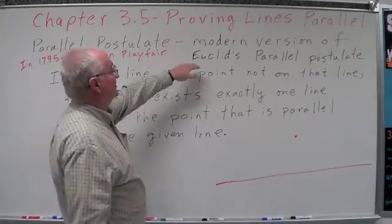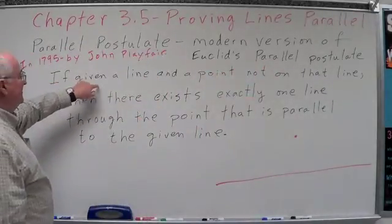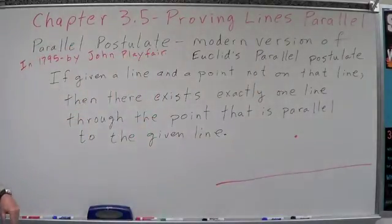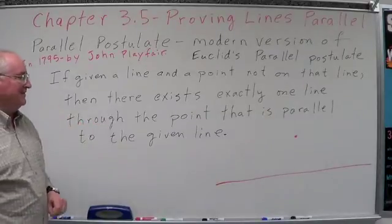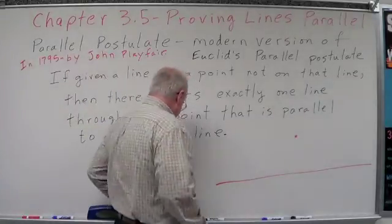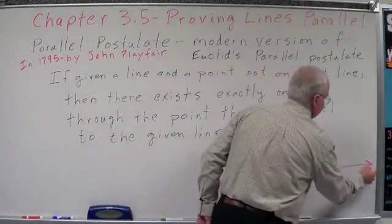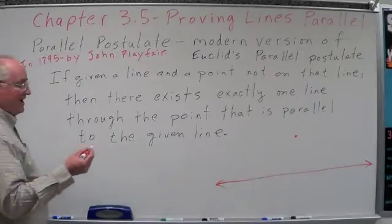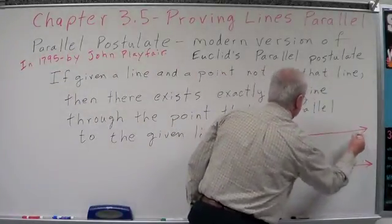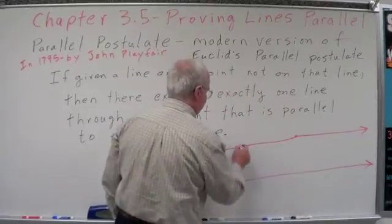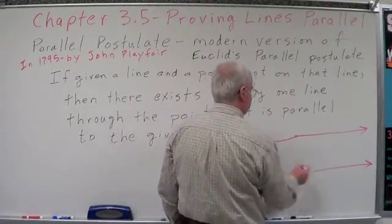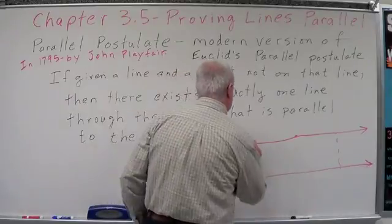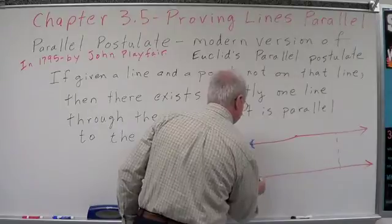The parallel postulate — a modern version of Euclid's parallel postulate. Here's the conditional statement: if given a line and a point not on that line, then there exists exactly one line through the point that is parallel to the given line. So we have a line and a point not on that line. There is exactly one line through that point that is parallel to this line, meaning it is equidistant — this distance is the same as this distance. We would note they are parallel by drawing tick marks on both lines.